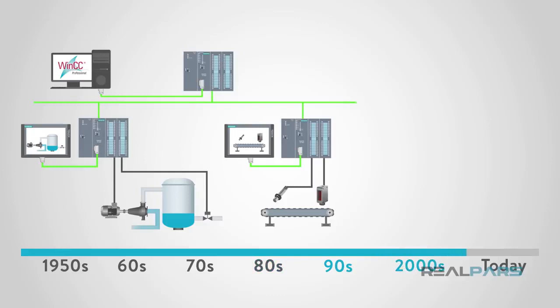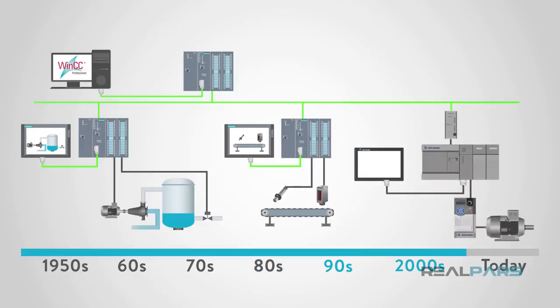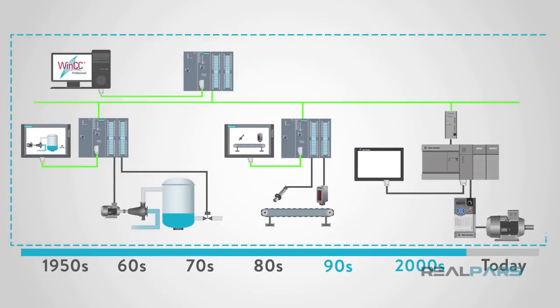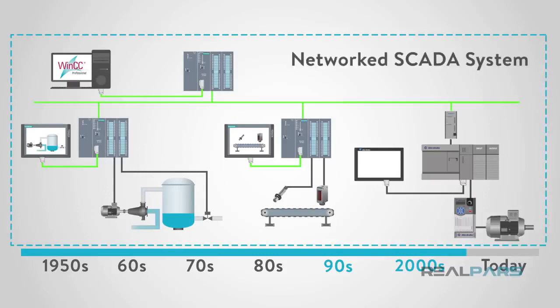Later in the 90s and 2000s, SCADA began to implement open system architectures, with communication protocols that were not vendor specific. As you can imagine, this opened up SCADA's ability to connect with varying vendors. This newer, more improved SCADA was then called a networked SCADA system.